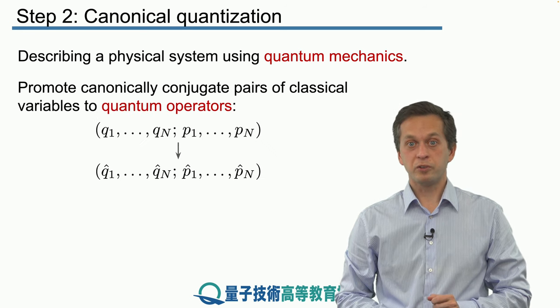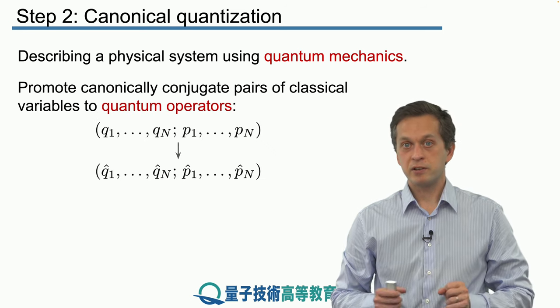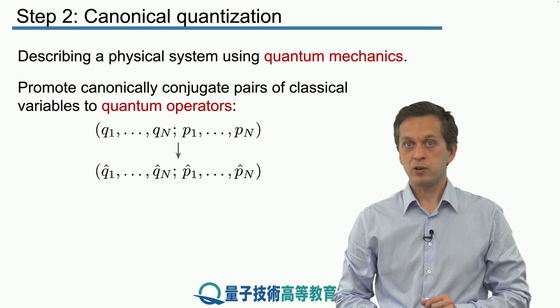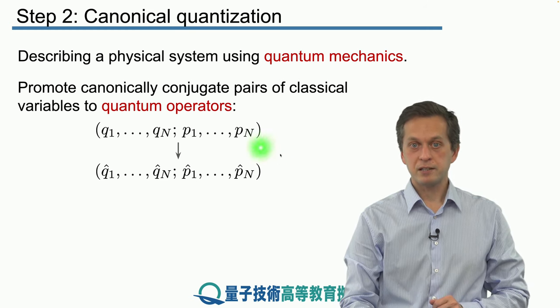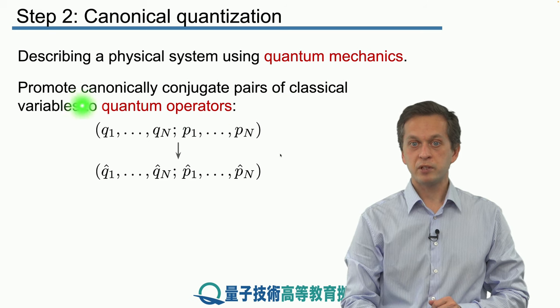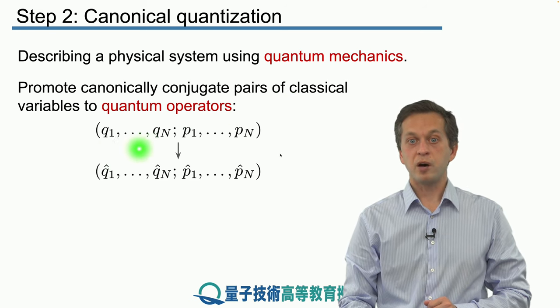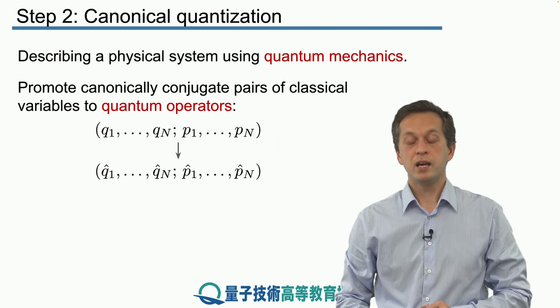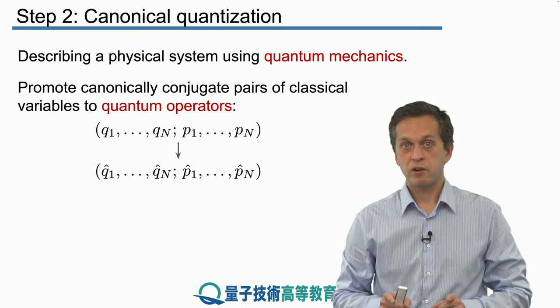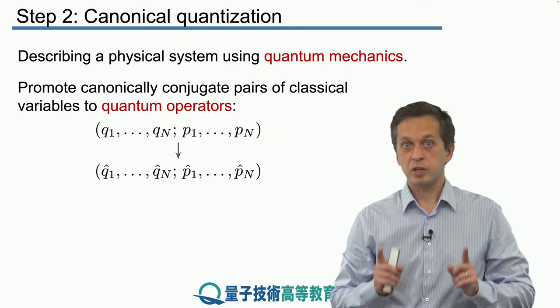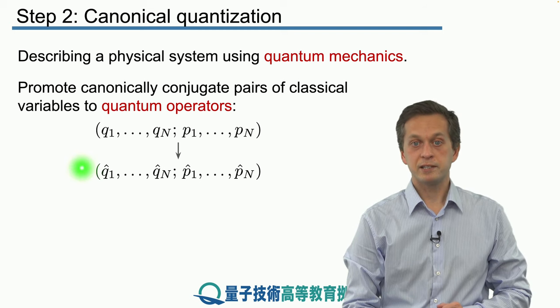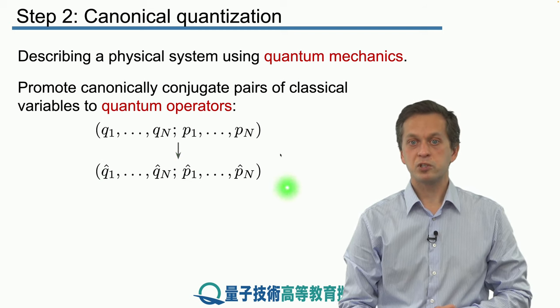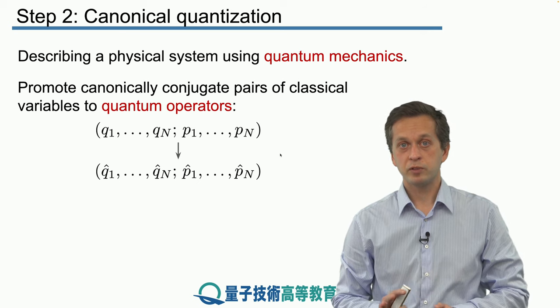Now, what do we do in quantum mechanics? It's actually very simple once you know the canonically conjugate variables in your corresponding classical system. You take your classical system described by the dynamical variables q1 up to qn and p1 up to pn, and you promote these variables to not be just scalars, but to be quantum operators. We denote it by putting these little hats over your variables just to make sure that we mean that they are quantum operators.